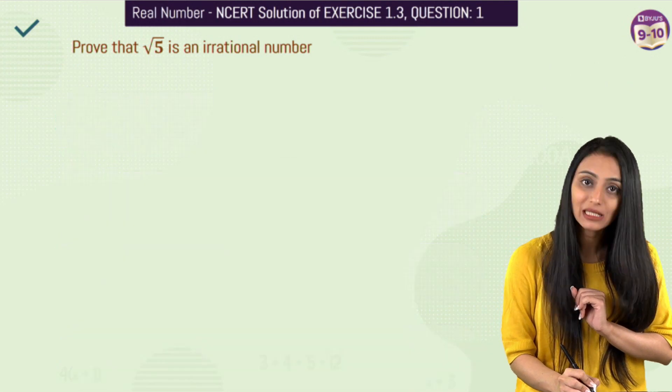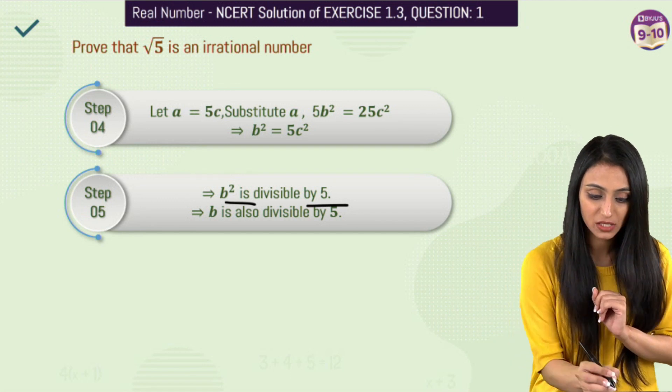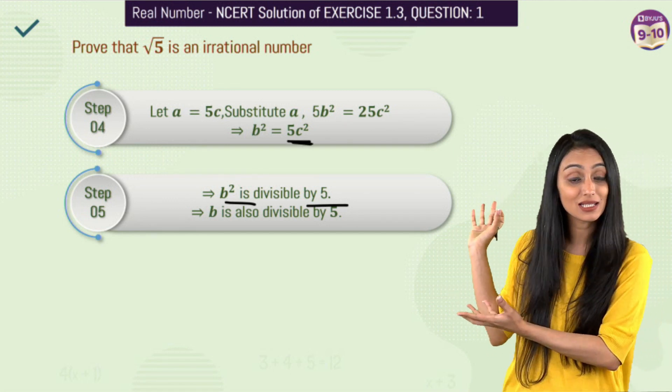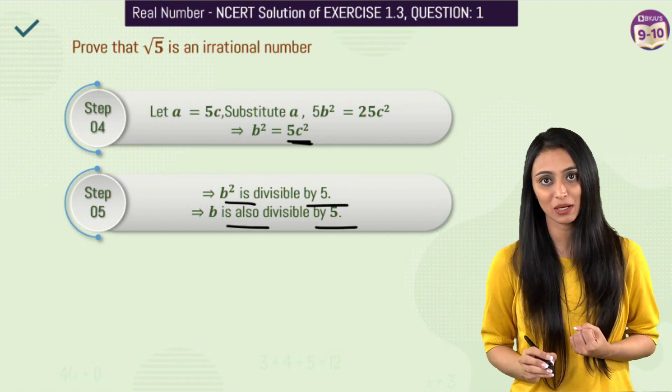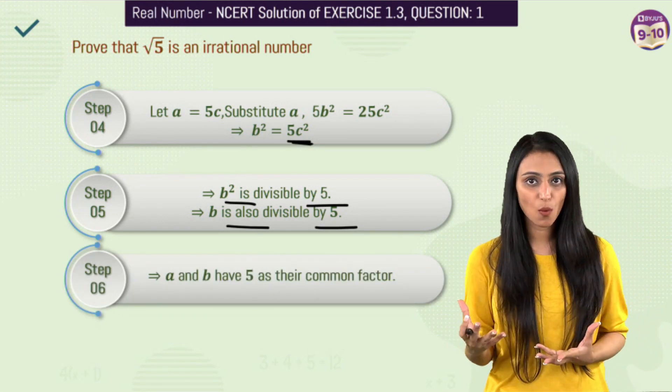according to the fundamental theorem of arithmetic, I can say here that this b square is divisible by 5 because you can see that this is 5 times c square. That means I can say that since b square is divisible by 5, that means b is also divisible by 5.